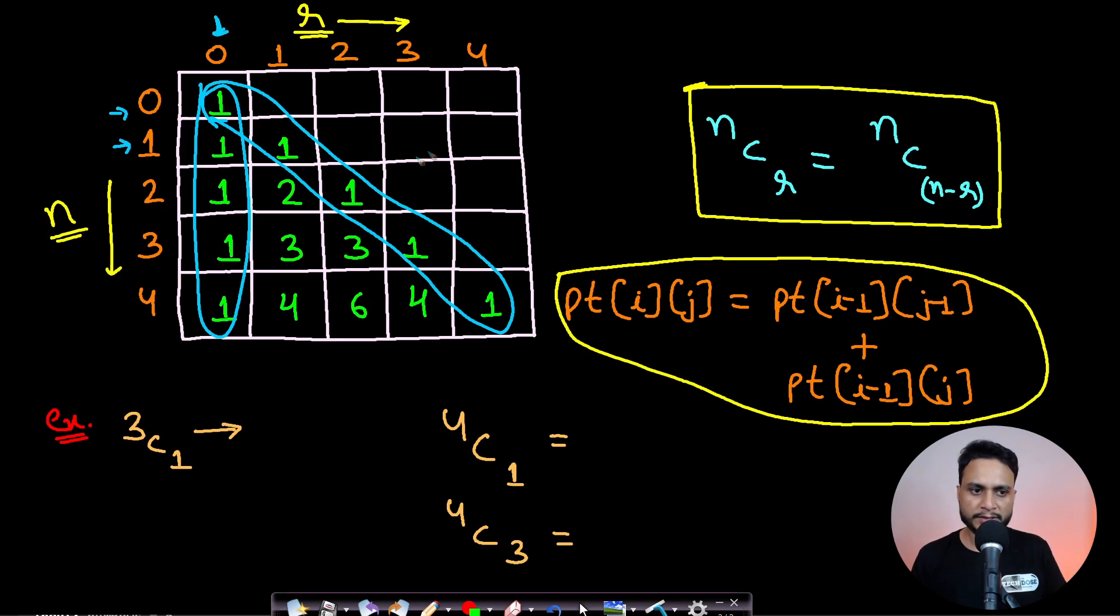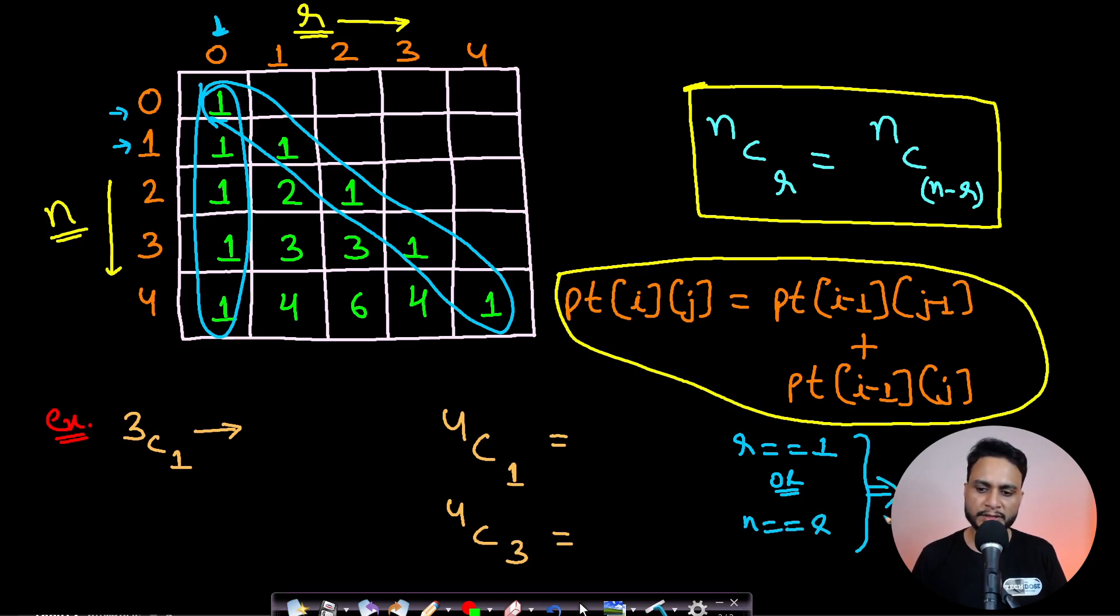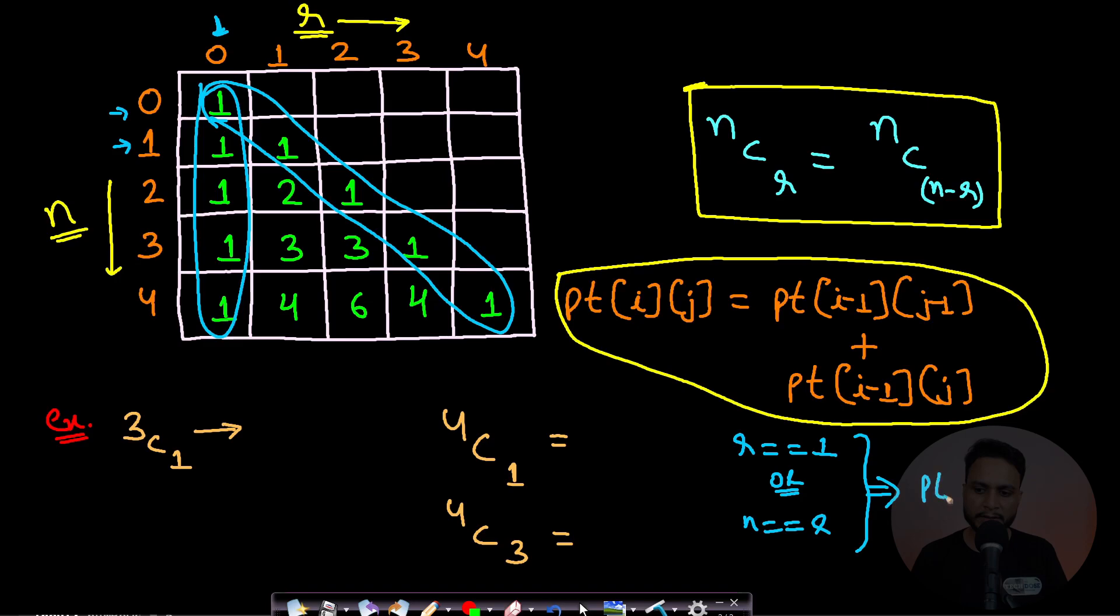How will we fill this matrix? If you are using an iterator where n is the row number and r is the column number, you can say that if r equals one or n equals r, in both these conditions you will place the Pascal's triangle value at (n,r) equals one. This ensures that the first column and the main diagonal have all values as one, which are the boundary elements.